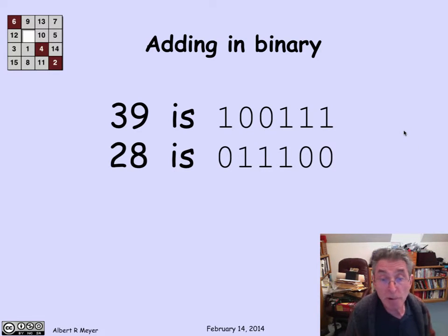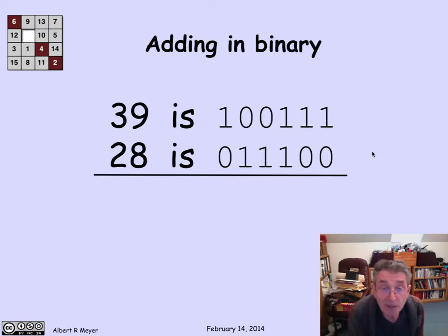Likewise, the binary representation of 28 is 011100. I'll let you check how that works with contributing 1, 2, 4, 8, 16, and 32. And finally, let's add these two numbers in binary.